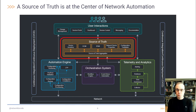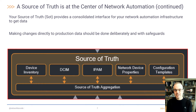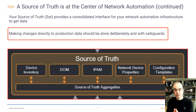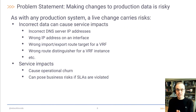A source of truth like Nautobot is at the center of your network automation. Your source of truth provides a consolidated interface for your network automation infrastructure to get its data. Therefore, making changes directly to your production data in your source of truth should be done deliberately with safeguards. Making changes to your production data is risky. As with any production system, a live change carries risks.